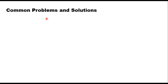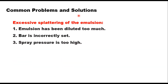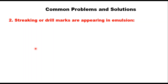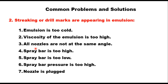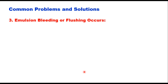There are three common problems which can be encountered in the field and their probable solutions. The first is excessive splattering of the emulsion, which can happen when emulsion has been diluted too much, the bar is incorrectly set, or spray pressure is too high. The second possible problem is streaking or drill marks appearing in the emulsion. This can happen because the emulsion is too cold, viscosity is too high, all nozzles are not at the same angle, spray bar is too high or too low, spray bar pressure is too high, or a nozzle is plugged.